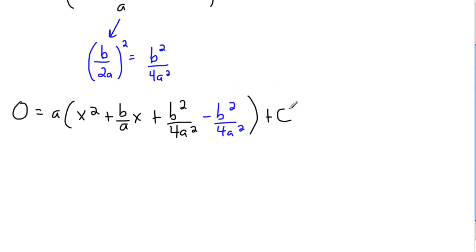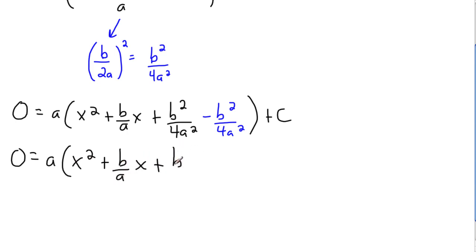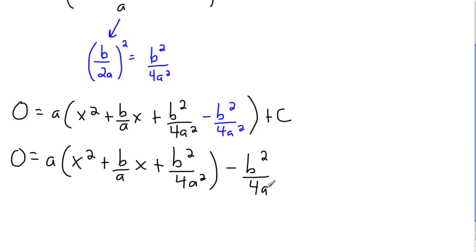Now I want to kick the blue term out of the parentheses to the right, which means I multiply everything by a. So: 0 equals x squared plus b over a times x plus b squared over 4a squared. Then the minus b squared over 4a squared, multiplied by a, gives minus b squared over 4a — the a on top cancels one of the a's in the denominator.